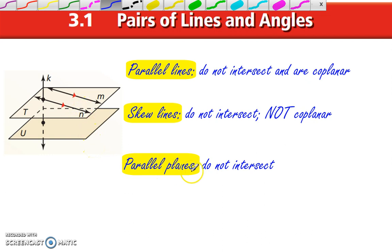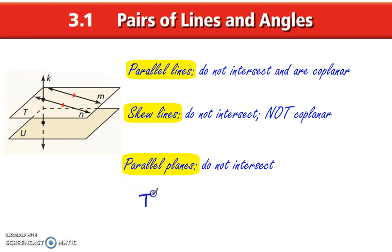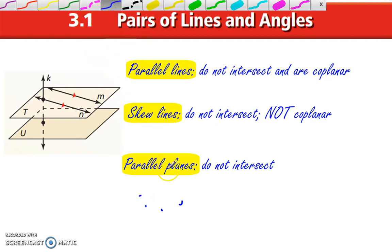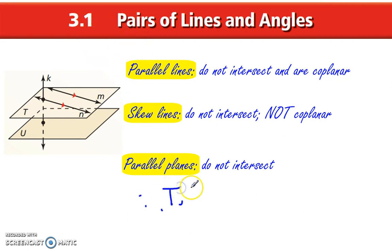And then parallel planes are planes that do not intersect, like plane T and plane U. We would write this as plane T is parallel to plane U. That is not very nice. Let's try that again. Plane T is parallel to plane U. Something like that.